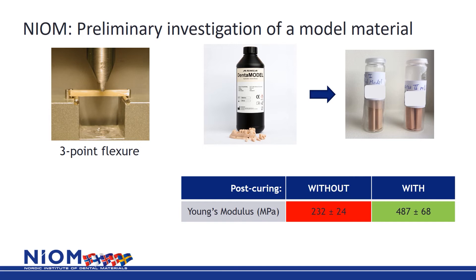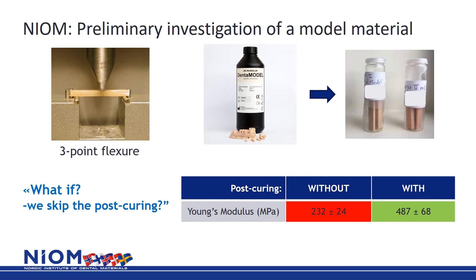Post-curing is an important step in the 3D printing process, and correct and complete post-curing is crucial for the material properties. In this preliminary investigation of a simple model material, we did a 3-point bending test. We looked at the situation where post-curing was skipped entirely, simulating a worst-case scenario. The Young's modulus is doubled with correct post-curing as compared to without post-curing, indicating that this final curing step is crucial for the material properties.